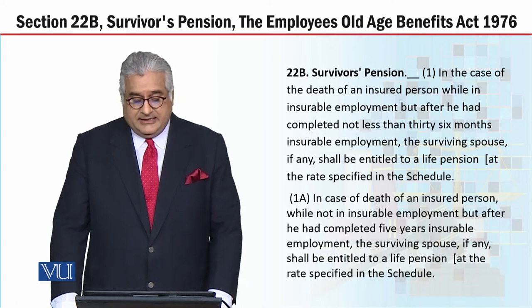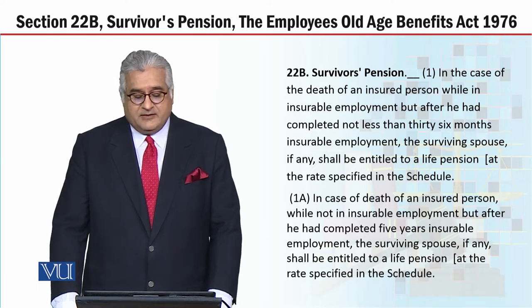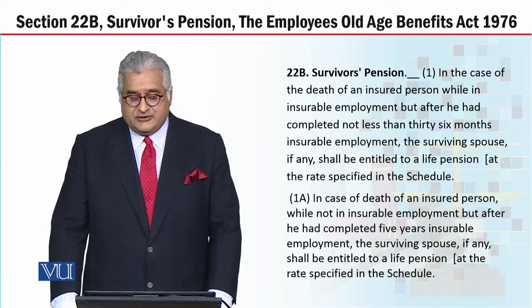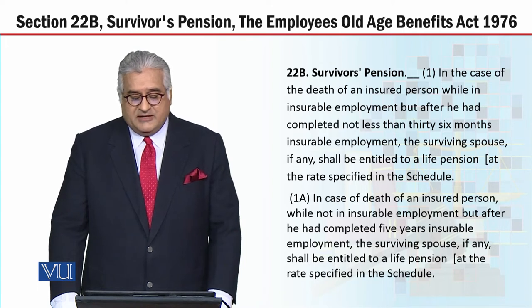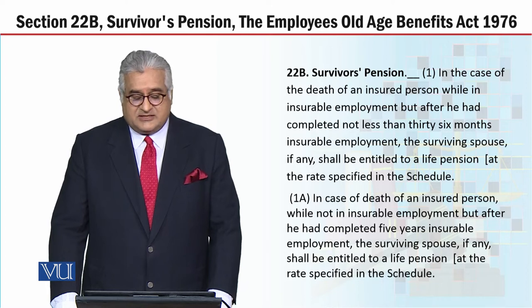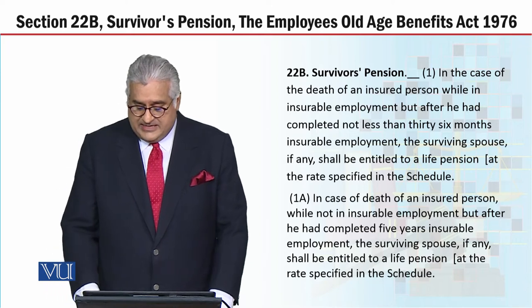Section 22B, subsection 1A: in case of death of an insured person while not in insurable employment, but after he had completed 5 years insurable employment, the surviving spouse, if any, my dear students, shall be entitled to a life pension at the rate specified in the schedule.